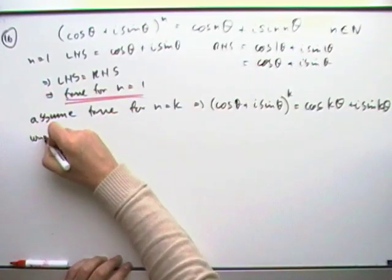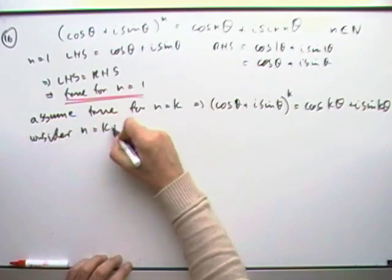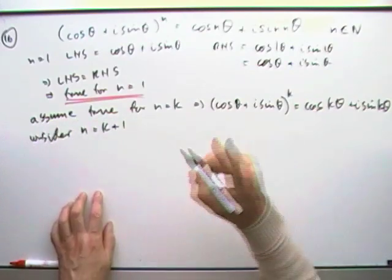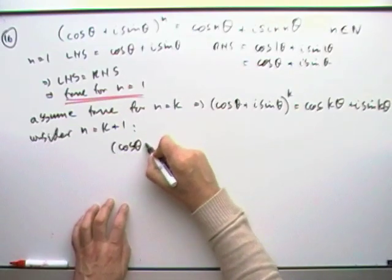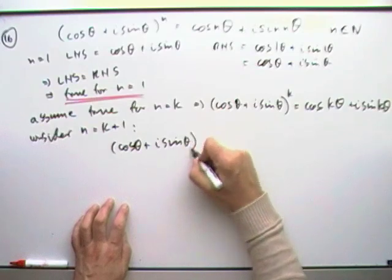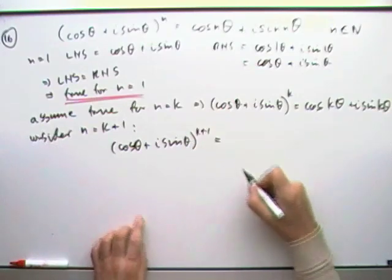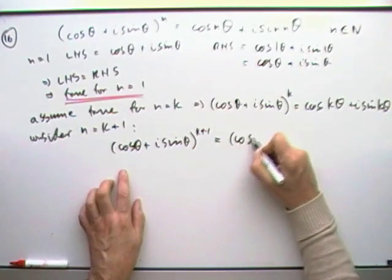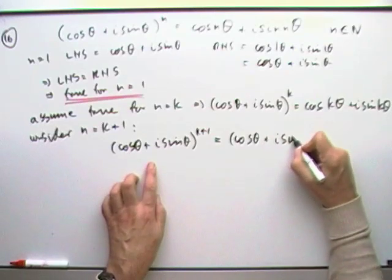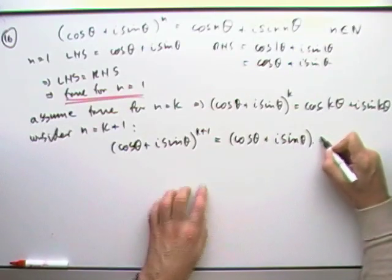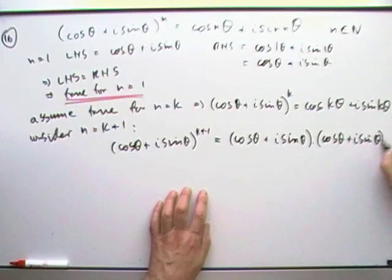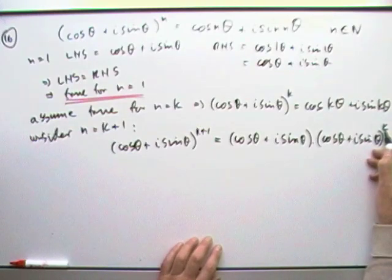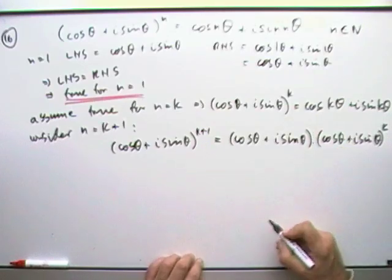And then consider n equals k plus 1. What have you got for k plus 1? Well, you've got this. Consider k plus 1. You've got (cos θ + i sin θ)^(k+1). And the first thing I must do is just split that. So I've got (cos θ + i sin θ) times (cos θ + i sin θ)^k. k factors plus another one factor, k plus 1 factors.